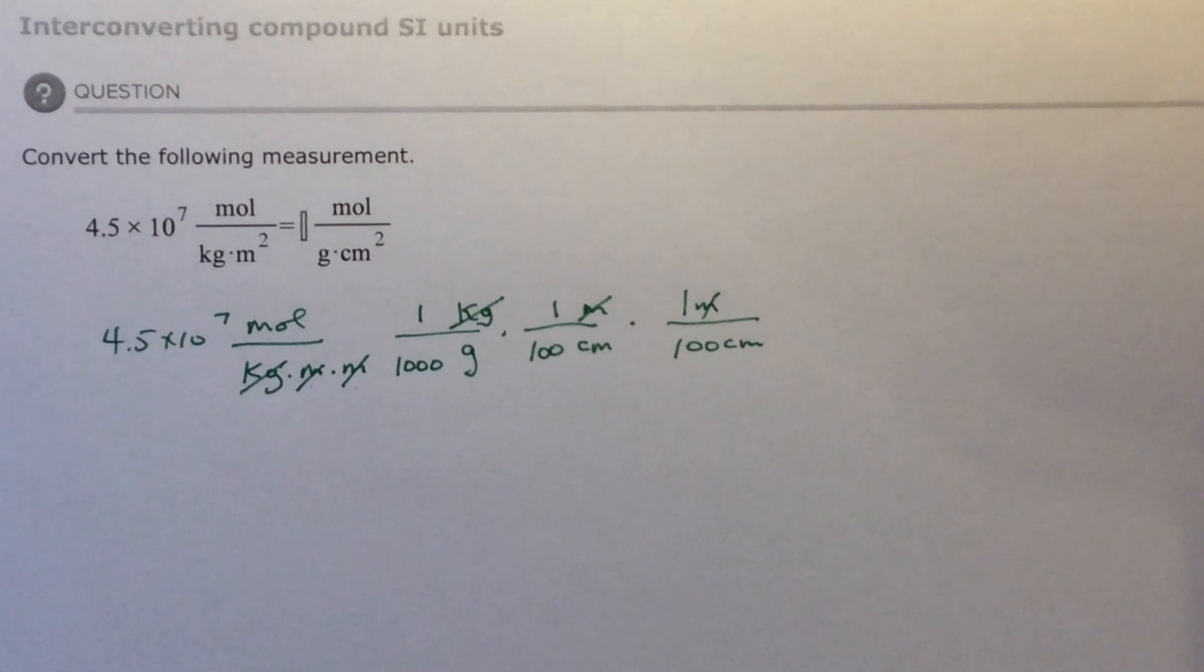So I'm going to have 4.5 times 10 to the 7 divided by 1,000. Equals. Divided by 100.